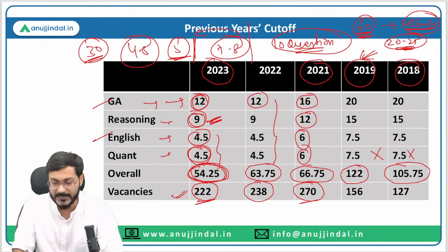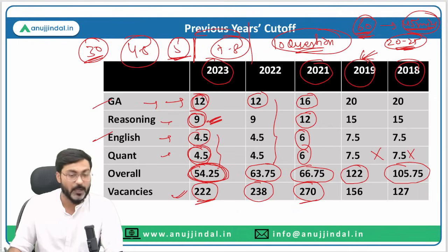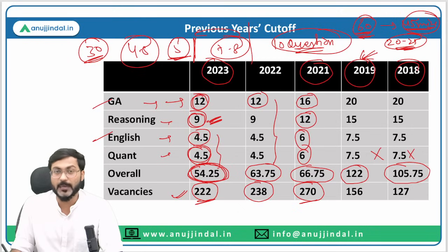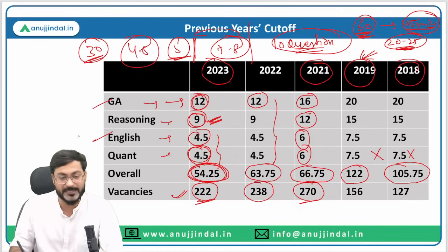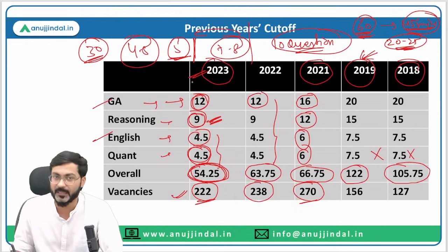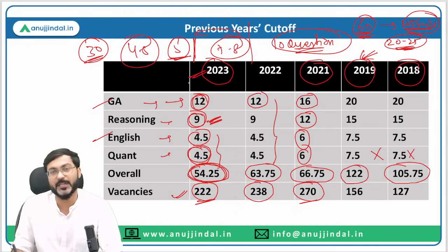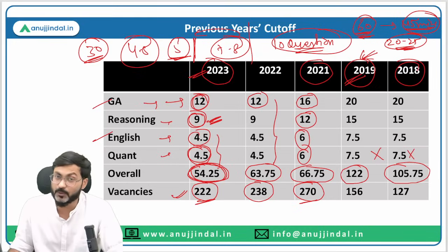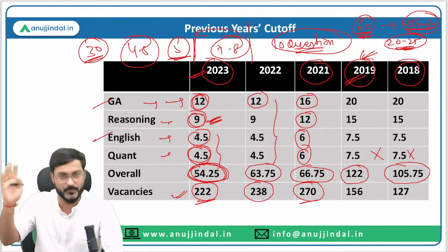There is no problem with that. For GA and English, you should not worry about the sectional cutoff at all — you need to score as maximum as possible in GA and English. I am speaking in the context of the 2023 level of examination. If the level changes to 2019, then obviously it will be very easy for everybody and you'll have to score as maximum as possible in all four sections.